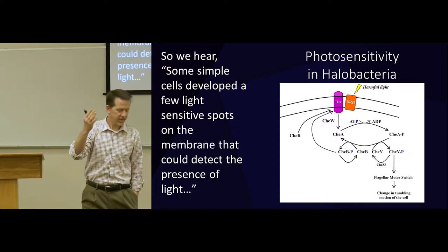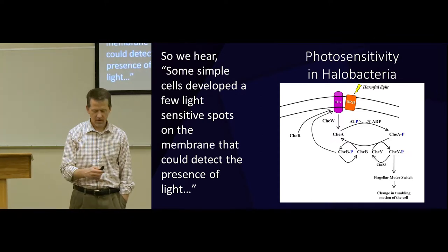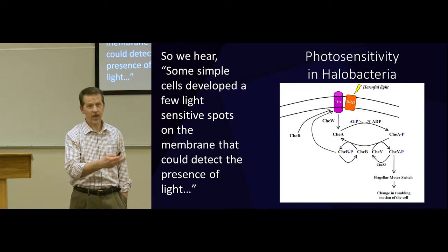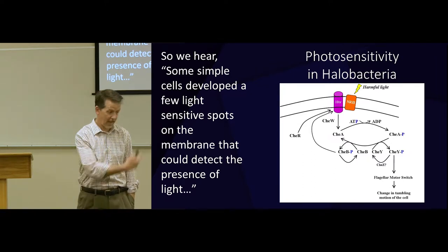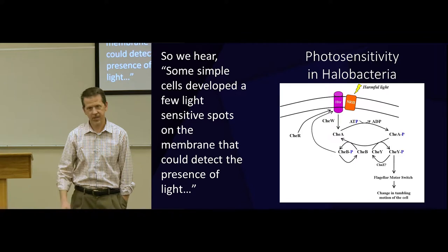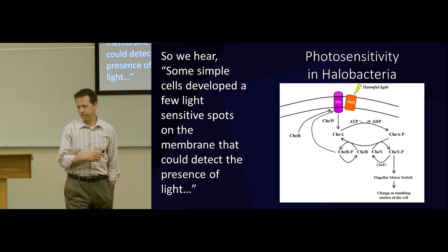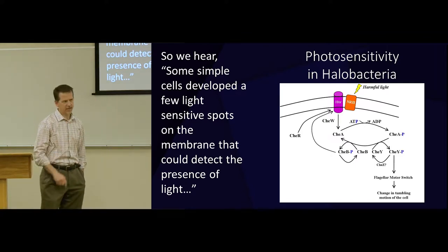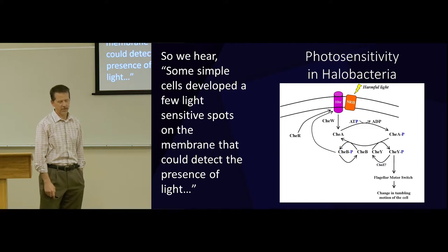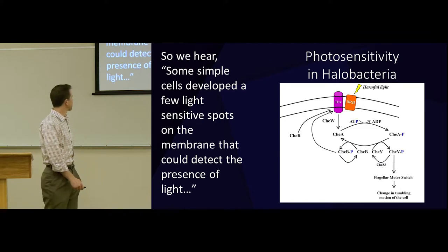We can hear, well, some simple cells developed a few light-sensitive spots in the membrane that could detect the presence of light and just swipe it off. Well, okay, that answers it. That's where vision began. That is insufficient. There's not enough empirical evidence to show, okay, now how is that going to happen? Tell me how that happened. In a step. That has signs of intelligence in it for lots of reasons.